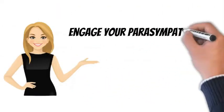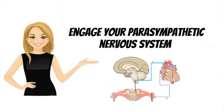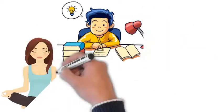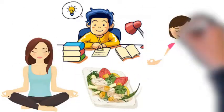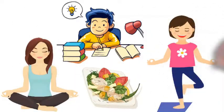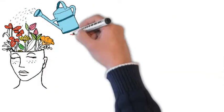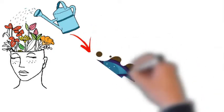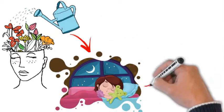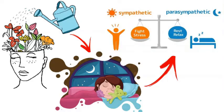Engage your parasympathetic nervous system, rest and digest mode. Journaling, meditation, mindful eating, deep breathing, and yoga are all relaxation activities that help us be present in the moment and calm the sympathetic nervous system, the fight or flight response. In order to rest, the parasympathetic nervous system must be dominant.